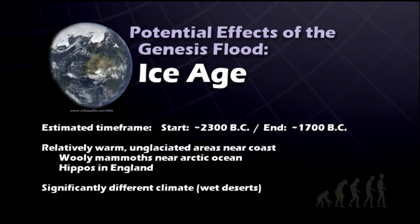Biblically, the ice age would have started shortly after the flood, around 2300 B.C., and probably would have ended by 1700 B.C. — fairly short-lived. Relatively warm, unglaciated areas would be expected near the coast, and that's exactly what the evidence implies. We see woolly mammoths that used to live near the Arctic Ocean. Many remains of woolly mammoths are found in northern areas that today would be impossible for woolly mammoths to survive in — there's just not enough food. But we do find their remains, and we know the climate had to be significantly different. Warm oceans next to those areas would have allowed that climate to exist and for woolly mammoths to live there.